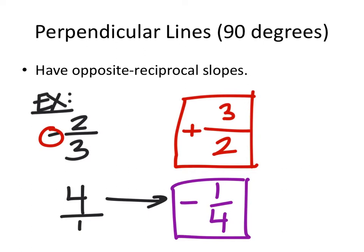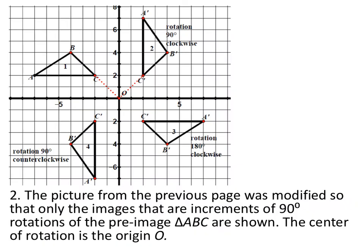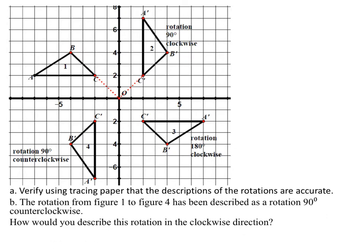Looking at the picture from the previous page with the yellow graph, we got rid of a lot of those images and just looked at 90 and 180 degree rotations. By the way, 180 degrees doesn't really matter if you rotate clockwise or counterclockwise. The rotation of the pre-image has its center of rotation at the origin.